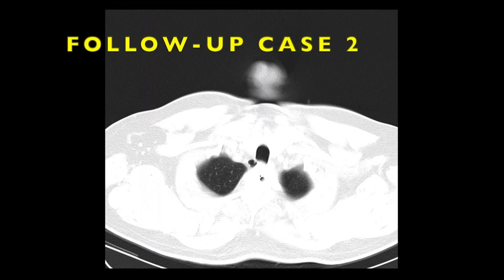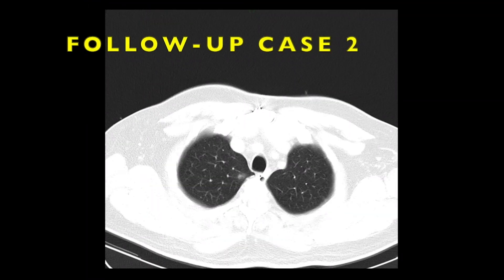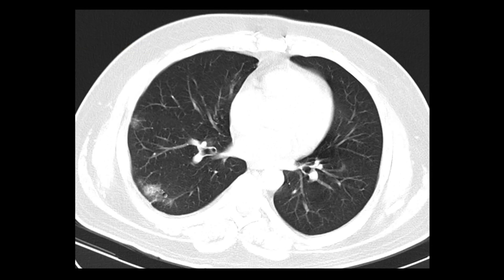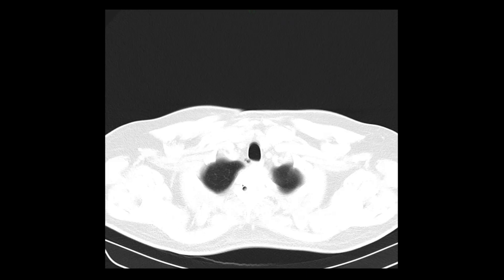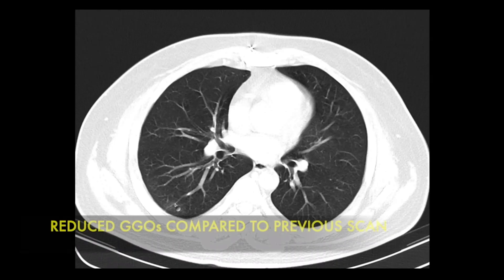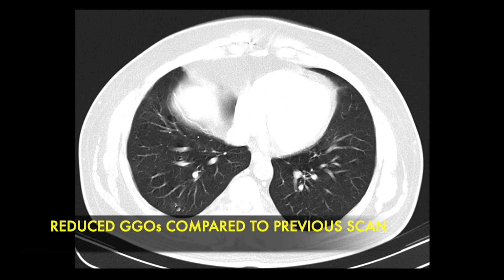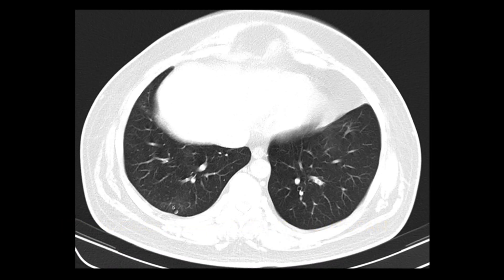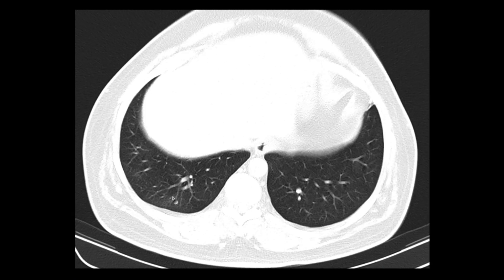This is another RT-PCR proven case of COVID-19 showing multiple ground glass opacities in the right lung. A follow-up CT after 8 days showed reduced ground glass opacities in the same region, demonstrating the response to treatment and recovery.